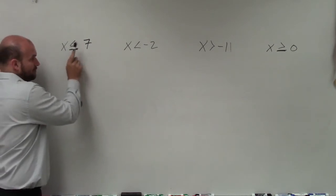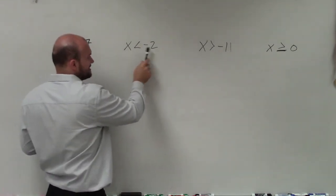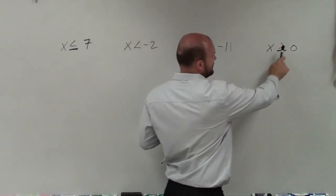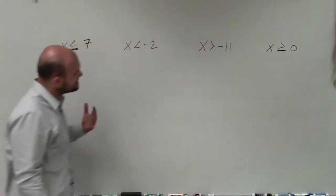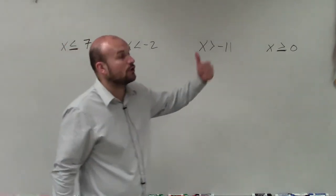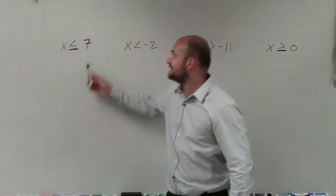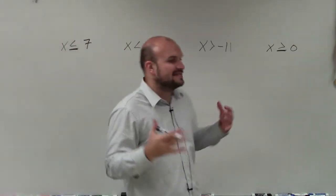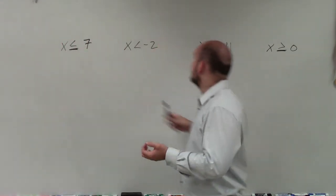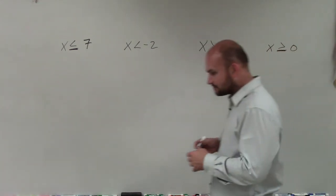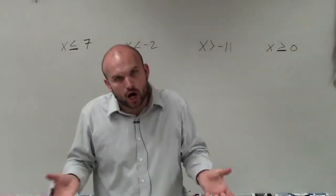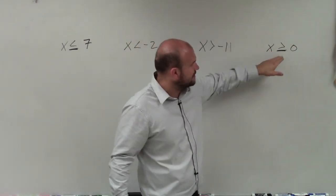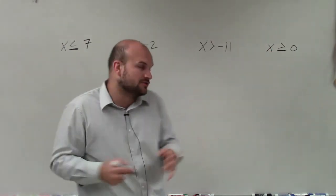This is x is less than or equal to 7. This is x is less than negative 2. x is greater than negative 11. And x is greater than or equal to 0. Notice I said greater than or equal to and less than or equal to when we had this bar under our inequality symbol. So what that means is those points, 7 and 0, are going to be a part of our solution. Because when 0 is greater than or equal to 0, that is true, right? So it's going to be a part of our solution.